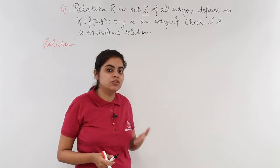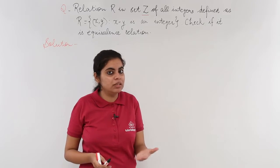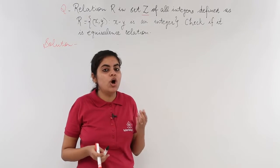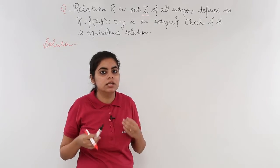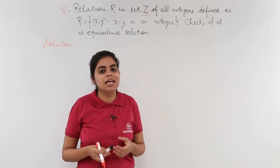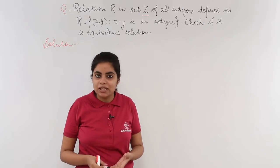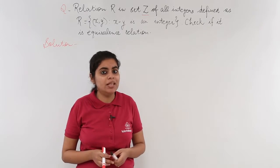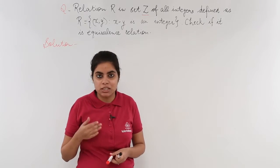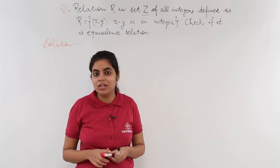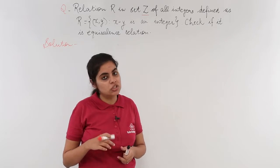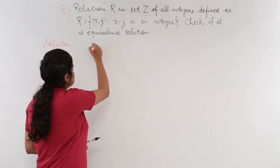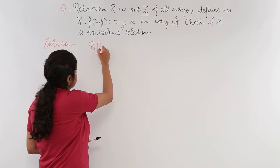From the three problems we did earlier and the video on the description of equivalence relation, any relation is an equivalence relation when it is reflexive, symmetric, and transitive. So let's see whether this relation is reflexive or not.